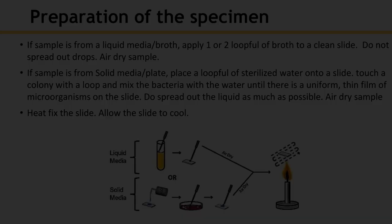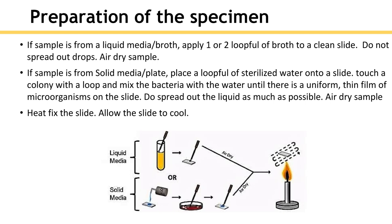Before starting the staining process, we need to prepare the smear. If the sample is from a liquid media or broth, apply one or two loopfuls of broth to a clean slide — do not spread out the drops, and air dry the sample. If the sample is from solid media or a plate, place a loopful of sterilized water onto a slide, touch a colony with a loop, and mix the bacteria with the water until there is a uniform thin film of microorganisms on the slide. Spread out the liquid as much as possible and air dry the sample.